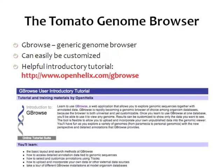The Tomato Genome Browser has been created using GBrowse, which is a generic genome browser that has been used for many species and can be customized to suit the needs of a particular community. You can find an introductory tutorial, and I would highly recommend it for anyone who's never used a genome browser before — it's about a 10-minute video. It covers the basic layout, how to access annotation data, customizing your tracks, and how to upload and incorporate your own data.